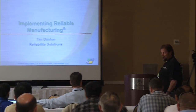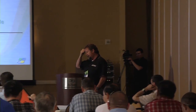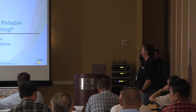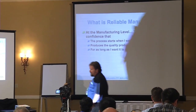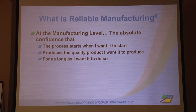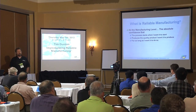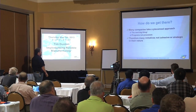I kind of threw together or merged a couple of little presentations I've done in the past. At our company, Reliability Solutions, we're all about reliable manufacturing. Anybody remember what we defined it as? On time — at the manufacturing level it's the absolute confidence that your process will start when you want it to start, produce the quality product you want for as long as you want, and it works at many levels. The question is: how do you get there?